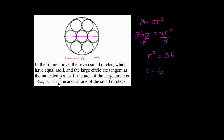Now, if the diameter of the larger circle is 12, what is going to be the diameter of one of the smaller circles? They all have the same diameter. Three of the diameters of a smaller circle are equal to the diameter of the larger circle, so each of these smaller circles is going to have one third the diameter of the larger one. So they're each going to have a diameter of 4, which means they each have a radius of 2.